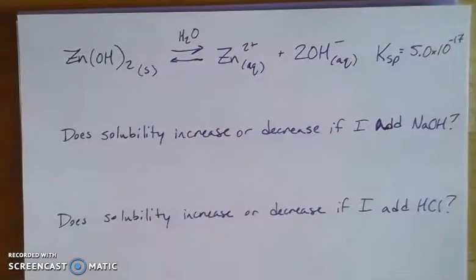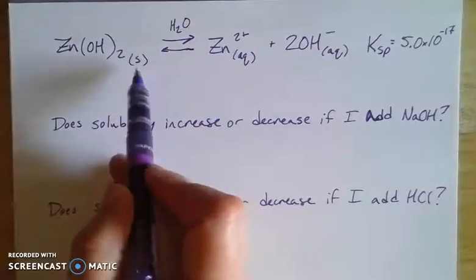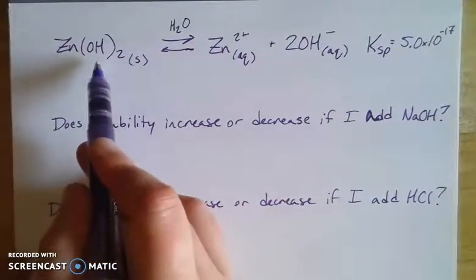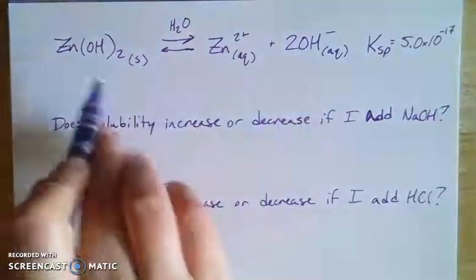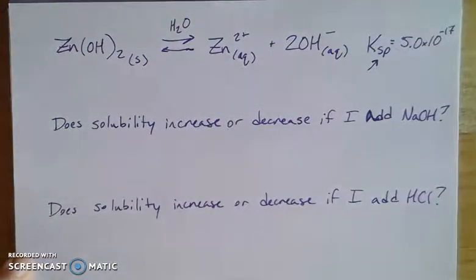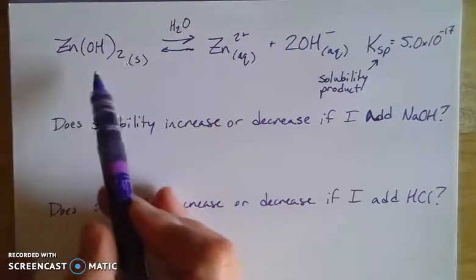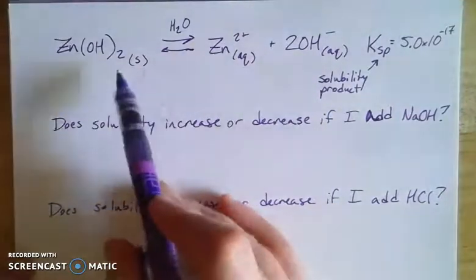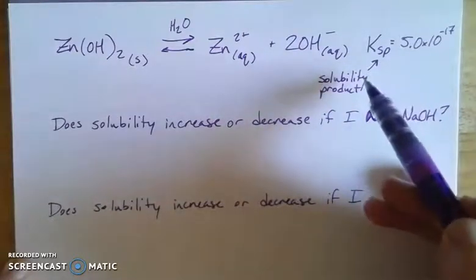Let's look at another example: zinc hydroxide. Zinc hydroxide is actually a weak base. The hydroxide is going to dissociate, and when it dissolves in water it gives you some hydroxide, making it basic, but it's not very basic. When we're talking about solids that dissolve in solution, we can talk about them in terms of a Ksp — where K means equilibrium constant and sp means solubility product. This Ksp value is quite low, meaning zinc hydroxide is fairly insoluble. This also serves as its Kb value, telling us about it as a weak base.